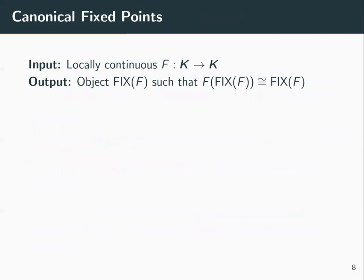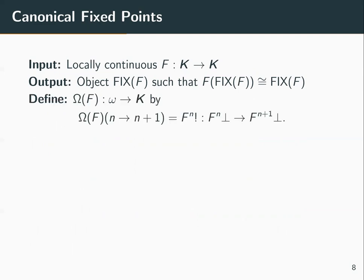We've known how to take fixed points since the work of Scott in the 70s and Lehman and Smith in the early 80s in a more general setting. Given some functor F, we want to output an object fix(F) that is a fixed point. We define an omega-chain — a functor from the category ω into K — where its action on object n is the nth iterate of F on the initial object, and morphisms are given by nth iterates of F on the morphism given by initiality.